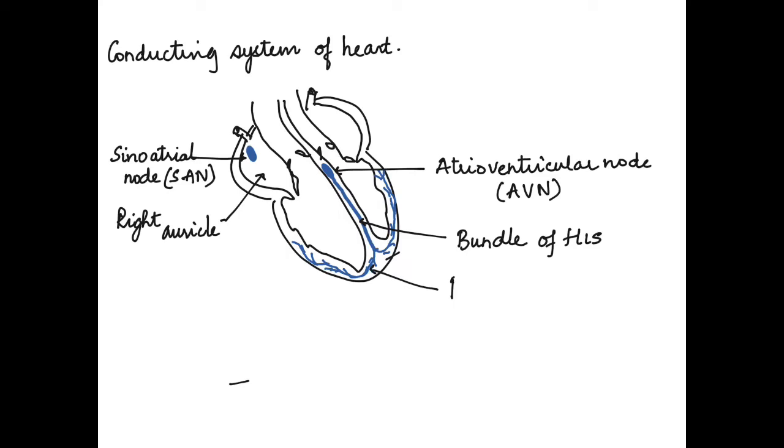The fibers that arise from the AVN are called as the bundle of His, through which the impulses pass to the further branches, that is the Purkinje fibers, which are in the ventricular walls.